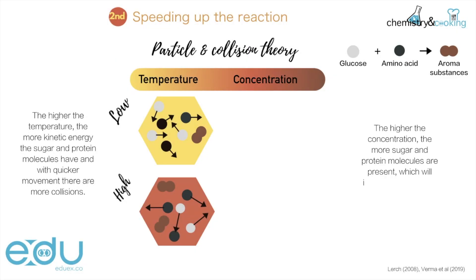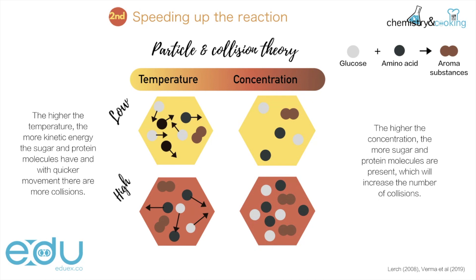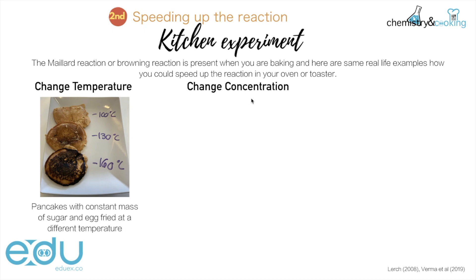The next one up is concentration. If you look at concentration, the higher the concentration — meaning we have more sugar and more protein in our bakery — the more particles that are actually reacting are present, and that means we would have more collisions. At low concentration we will have some particles producing a certain amount of aroma substances, but if we increase that concentration, whether we double or triple it, we just have more of those reacting particles, more reactants present, and therefore we are also going to produce far more aroma substances because we have far more successful collisions.